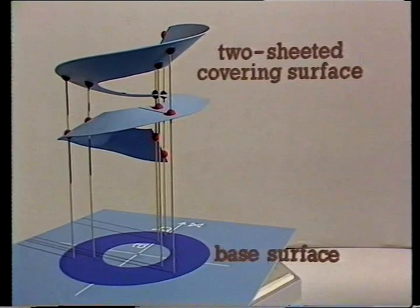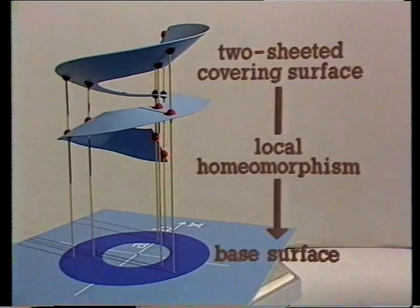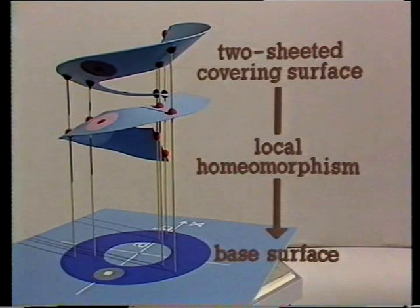We call the bottom surface the base surface, and the top one is a two-sheeted covering surface. Actually, this name has a rather specialised meaning — it means more than just that the projection map is two-to-one. It also means that the projection map is a local homeomorphism. That is, if you consider any point in the base and a small patch containing the point, then over the patch lie two homeomorphic patches containing the two corresponding points. Each of these two patches, considered separately, is projected homeomorphically onto the base patch.